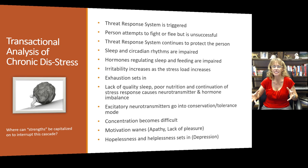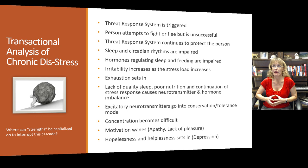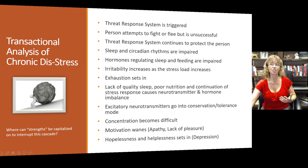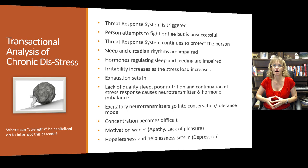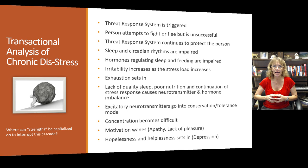So where can strengths be capitalized on to interrupt this cascade? We may not be able to prevent people from experiencing a trigger, but we can help them identify what things in their environment are triggering, and whether there's any way to replace them with things that trigger positive, empowered thoughts and feelings. It may also be about developing resources they can use — like mindfulness in the morning — in order to mitigate or prevent distress.